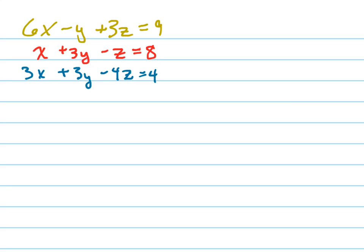So the first thing we're going to do is combine these top two equations, red and yellow make orange, and we're going to combine them and eliminate one of the variables. Then we're going to combine the bottom two equations, red and blue make purple, and we're going to make another equation in the same two variables.